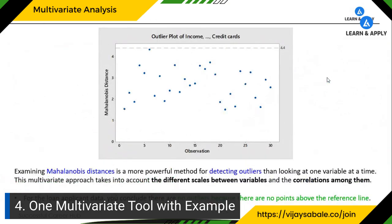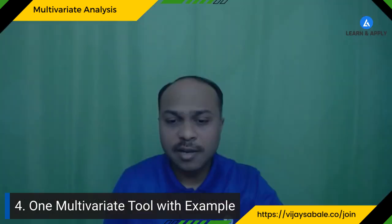The outlier plot uses the Mahalanobis distance method to detect unusual observations. Outliers indicate some problem or error in data collection. If an outlier is present, a reference line is plotted, and any points passing this line are considered outliers. The multivariate approach accounts for different scales between variables and the correlations among them. For the loan applicant data, we conclude there are no outliers because no points exceed the reference line.